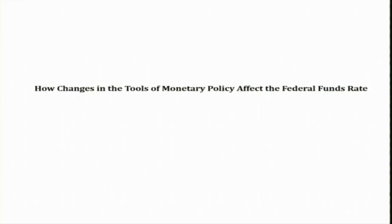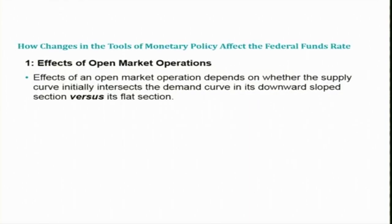Let us start with the first one: the effects of open market operations on the Fed fund rate. The effects of an open market operation depend on whether the supply of reserve curve initially intersects the demand curve in its downward-sloped section versus its flat section. We have seen that the demand curve has both a downward-sloped section and a flat section. We are going to see how each scenario affects the Fed fund rate.